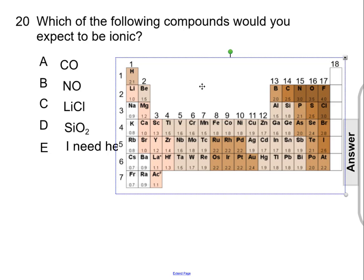First, let's look at carbon and oxygen. The difference is 2.5 versus 3.5. The difference is 1. That will not form an ionic compound.